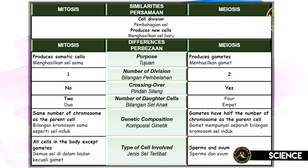Everything starts from these two: mitosis and meiosis. Mitosis happens to all the cells in your body except for gametes. Gamet means sperm and ovum. Sperm and ovum go through meiosis — that's a separate process. There are many reasons why they are different. You can see the differences from the purpose, number of division, crossing over, number of daughter cells, genetic composition, and types of cells involved.